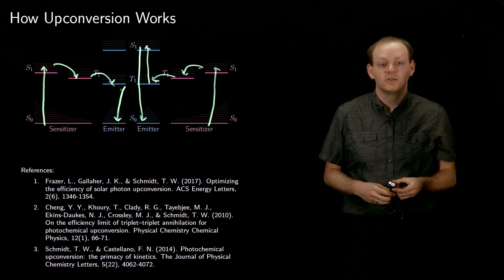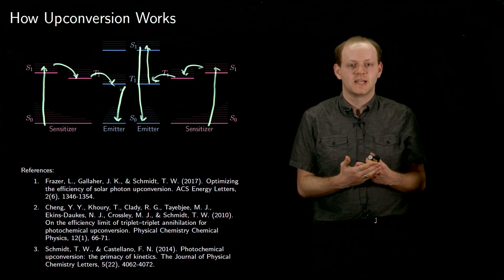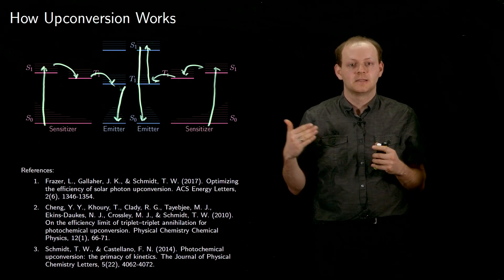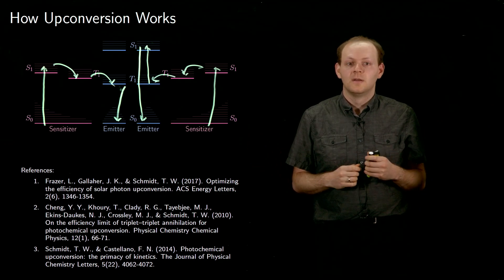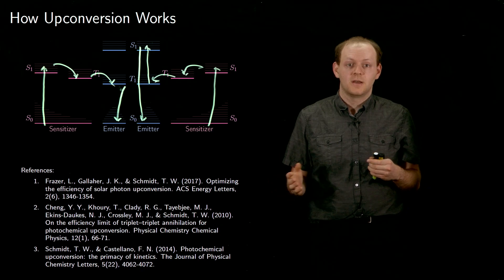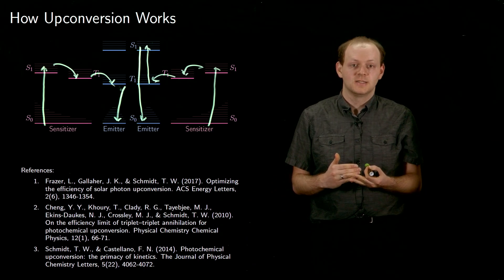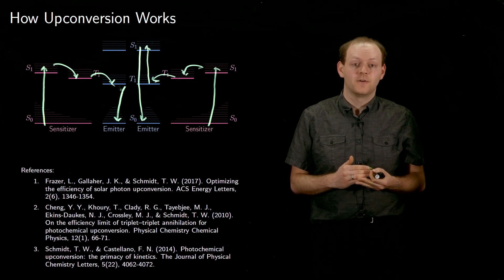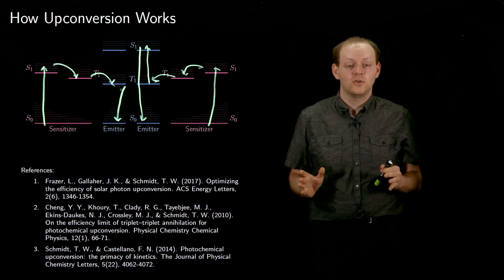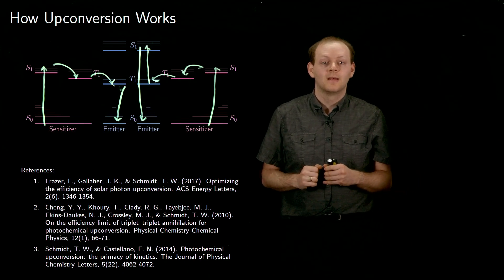In conclusion, upconversion is a way to take the light that passes through a solar cell, convert it to a higher energy, and then use that to make useful electrical power. This process obeys the law of conservation of energy because, while the energy of the photons that make up the light has increased, the number of photons has decreased, ensuring the total energy of the system decreases through the course of the process. Thank you.